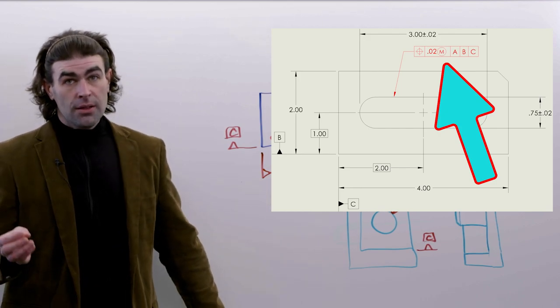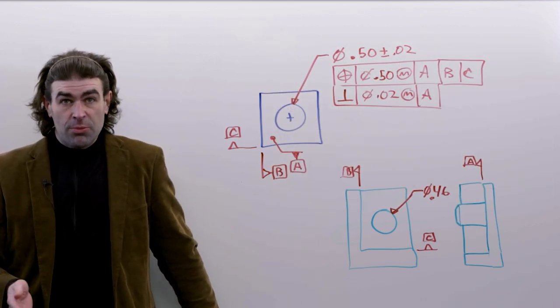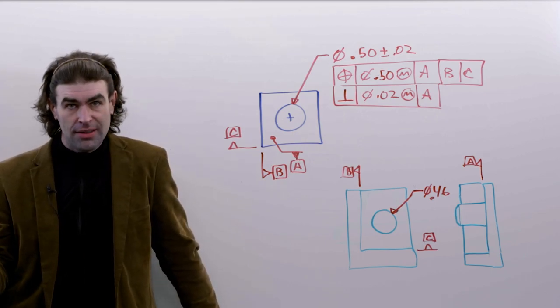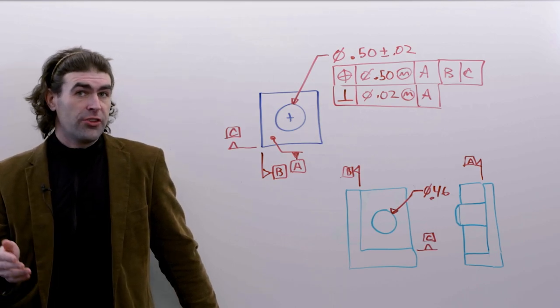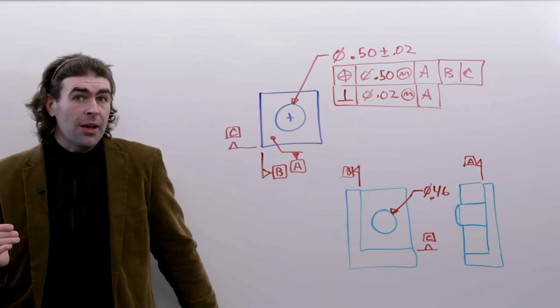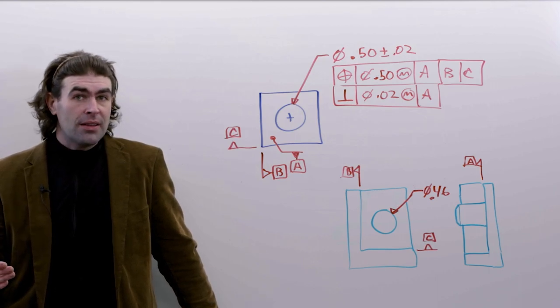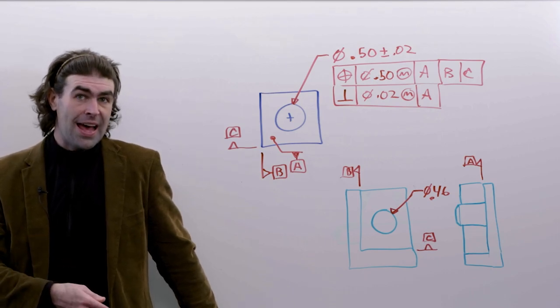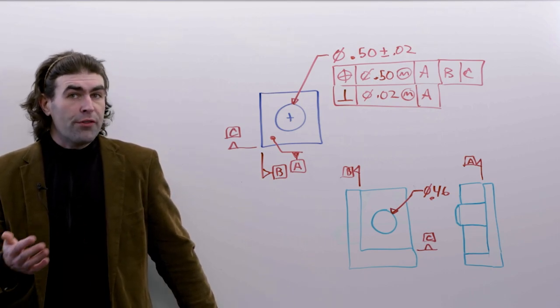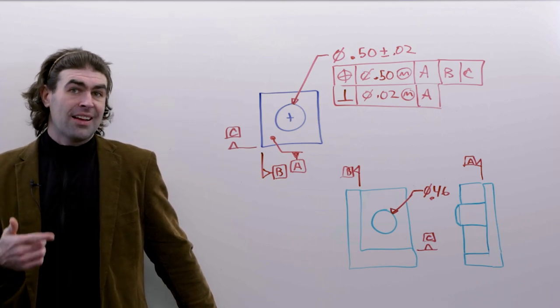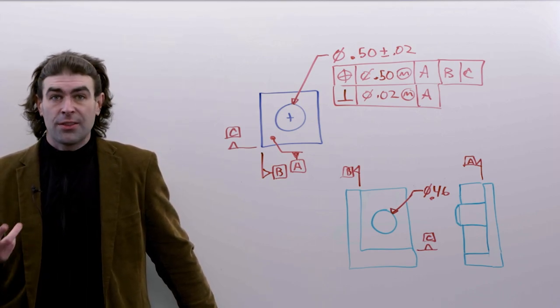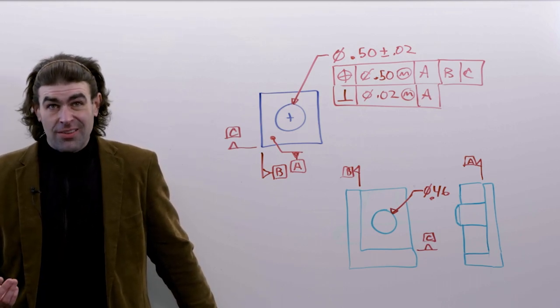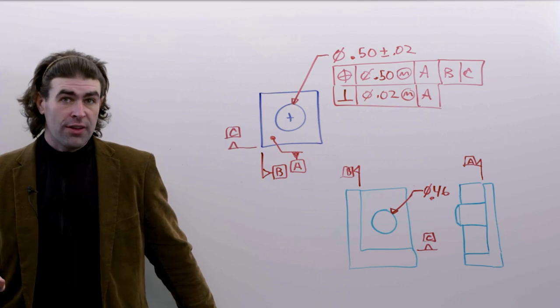Now the Y14.45, the data measurement standard, also clears up this term axis method - it calls it the resolved geometry method, which I totally agree with. When you say axis method, you might be measuring position of a center plane, but you're using the axis method. Resolved geometry applies to center plane, axis, or center point - the three things position controls. Any other kinds of features, you're basically using the surface method.